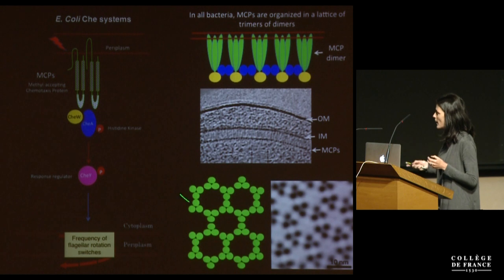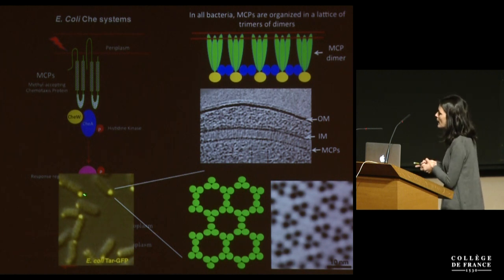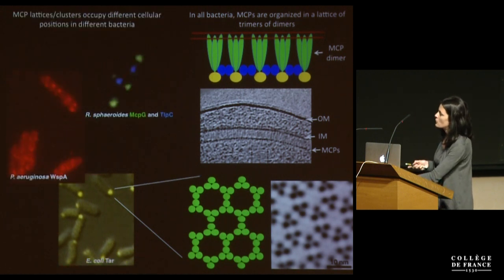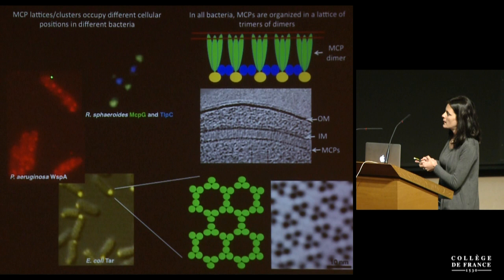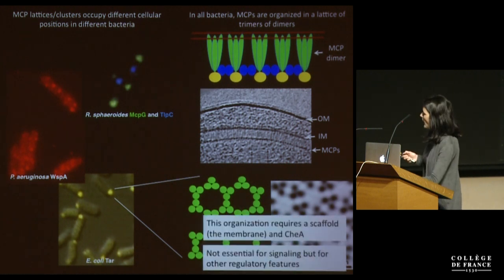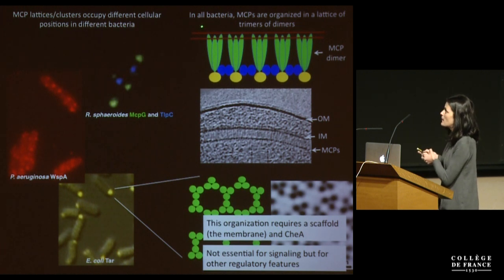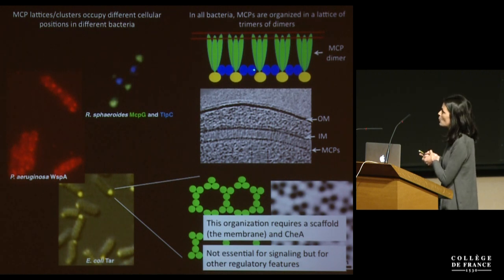This structure is universally present in bacteria — all chemoreceptors that have been studied are organized this way. However, they can have different cellular locations. In E. coli, chemoreceptors are localized at the cell pole. But in other bacteria, such as Pseudomonas aeruginosa or Rhodobacter sphaeroides, they have different cellular localizations: clusters distributed laterally in cells, or clusters at different positions. They can all form clusters. This organization requires a scaffold, which is the membrane, because without the transmembrane domains, receptors are diffused in the cytoplasm, and it requires downstream components, because without those, receptors are dispersed in the membrane.